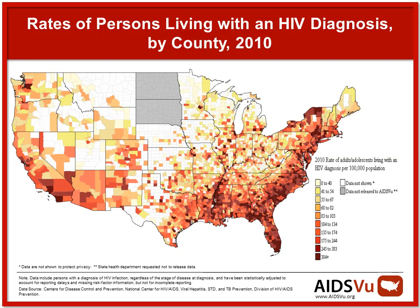This map gives you an idea of the distribution of HIV infection across the country. Although all states in the country are affected by HIV, you can clearly see that the epidemic is concentrated along the East and West Coast, but most especially in the southeast part of the country.